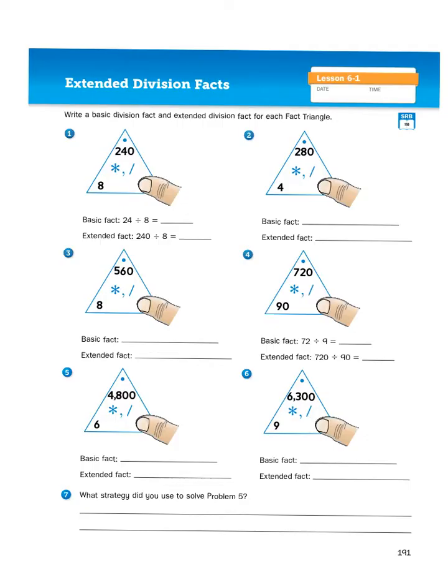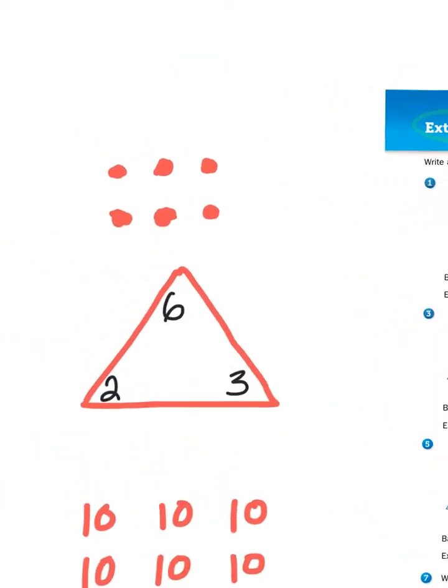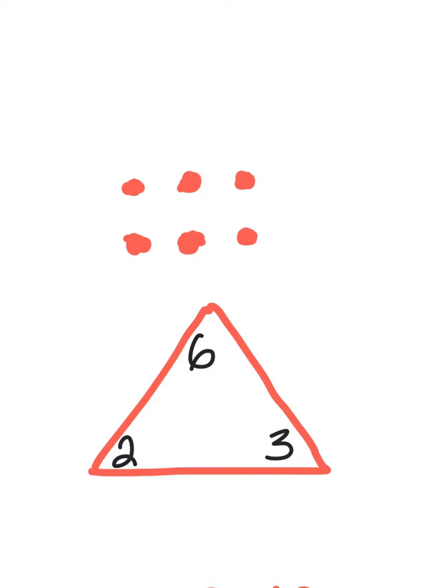Now, before we get into extending our division facts, we need to first talk about what are division facts. So, if you would please take a look for a moment at this array, I have two rows with three dots in each row, because 2 times 3 equals 6.